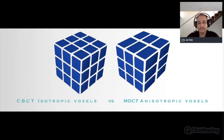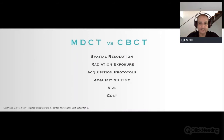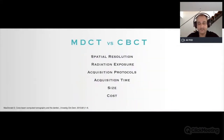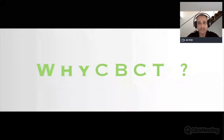The non-isotropic voxels of medical CT result in poorer resolution compared to the isotropic voxels of CBCT, which translates into better resolution. The main differences between MDCT and CBCT are: spatial resolution — with an advantage for CBCT; radiation exposure — much less in CBCT; different acquisition protocols; shorter acquisition time; smaller machine size; and lower cost.